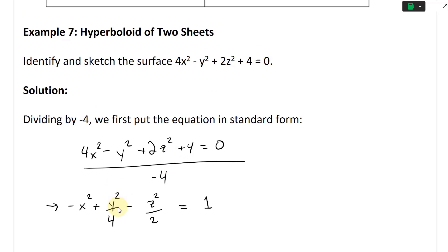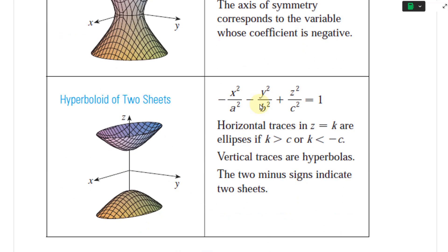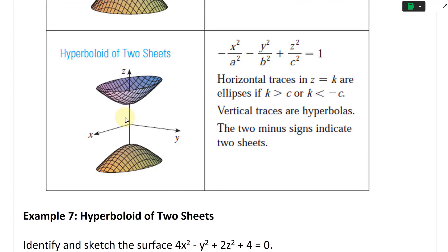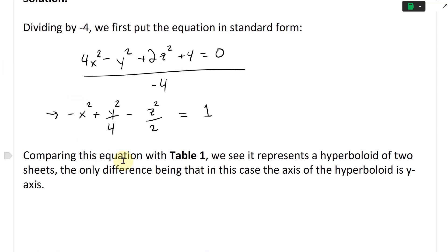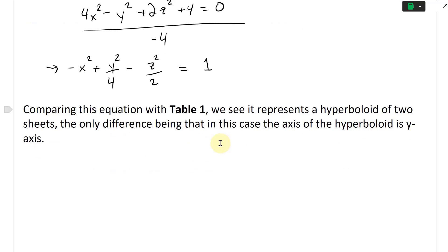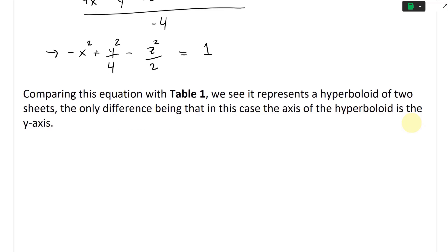In standard form we have two negatives: a negative x² and a negative z², while the y² term is positive. This indicates the axis of the hyperboloid is the y-axis. Comparing this equation with the standard table, we see it represents a hyperboloid of two sheets where the axis is the y-axis.